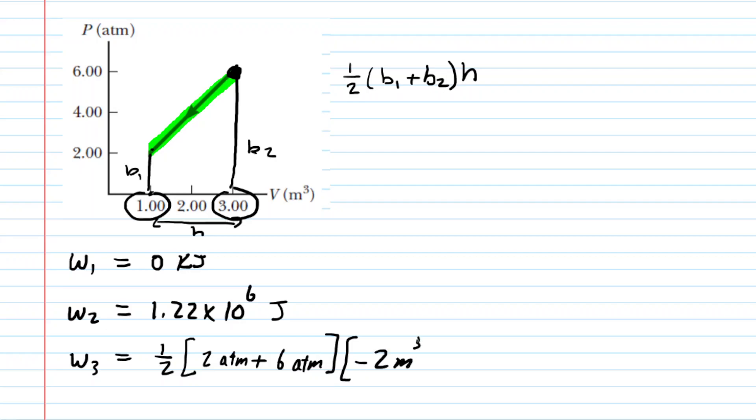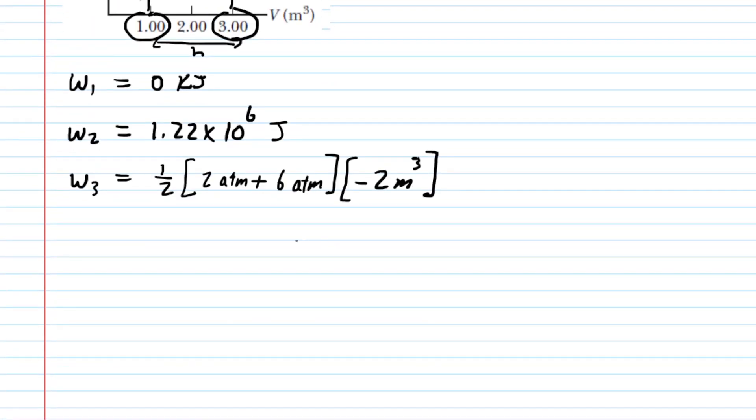Work can be negative in these processes. So just make sure you use negative there. And then again, we have to make a conversion. Let's simplify a little bit. We have one half multiplied by 8 atm, and then we have this times the negative 2 meters cubed. We have to convert the atm into pascals. So just like before, one atm is 1.013 times 10 to the power of 5 pascals. We do that conversion. The atm's cancel. And now our work will come out in joules.